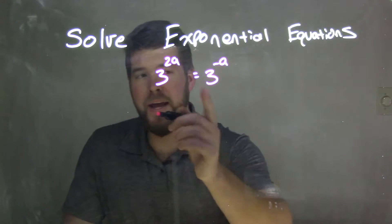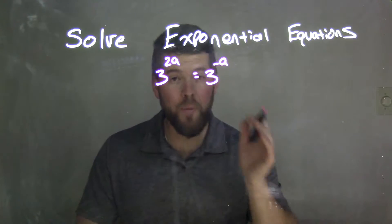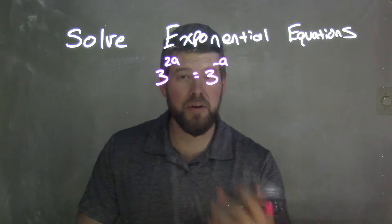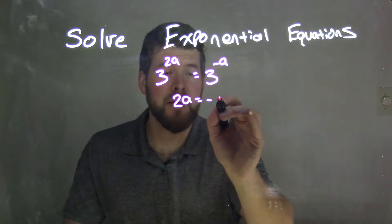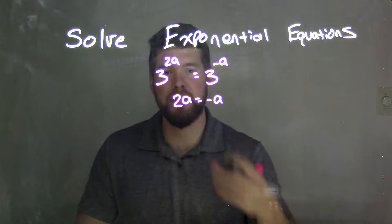Well since we already have the same base we know that we can set our exponents equal to each other to solve. So we're left with 2a equals negative a and get rid of those 3s as the base.